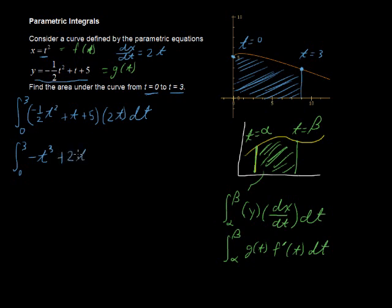So I've got this integral now of negative t to the third plus 2t squared plus 10t dt. Now, I did that by just distributing this 2t, of course. Okay.